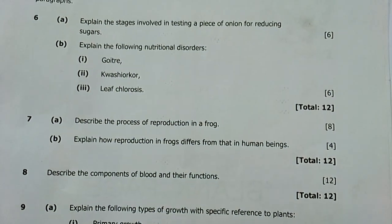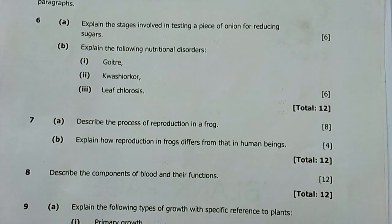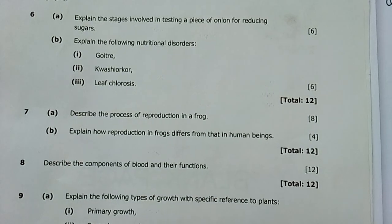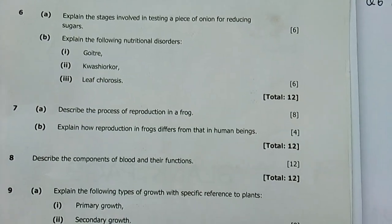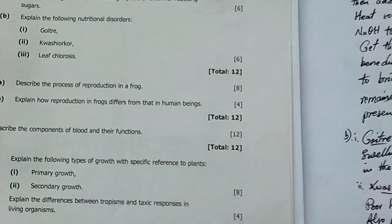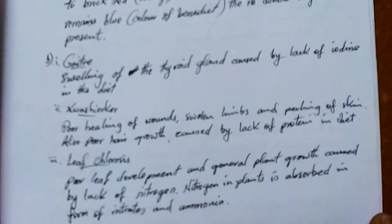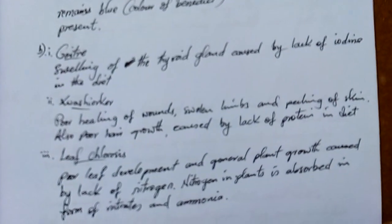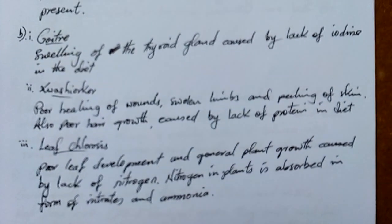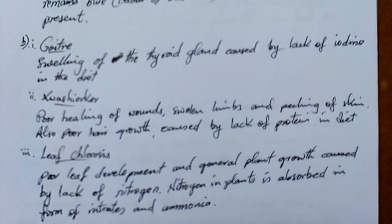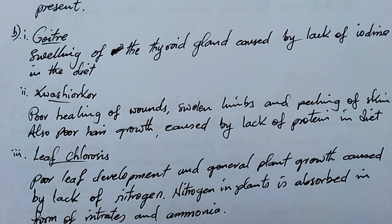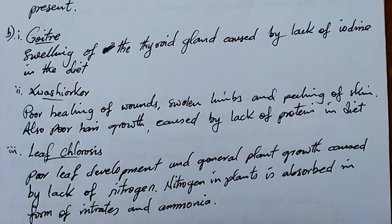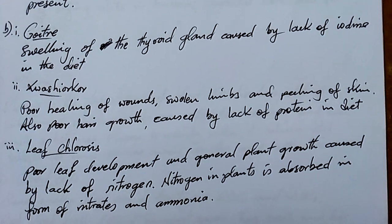Number B: explain the following nutritional disorders — goiter, kwashiorkor, and leaf chlorosis. Six marks, so two for each. I tried to go direct to the point.